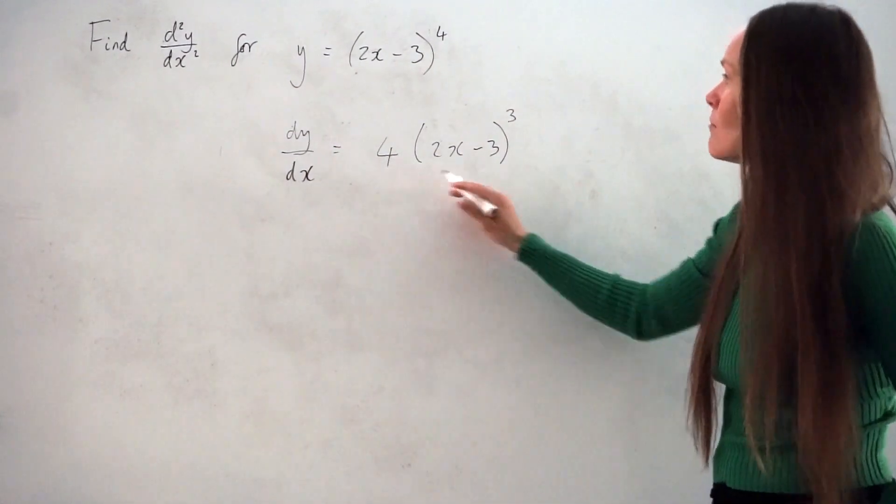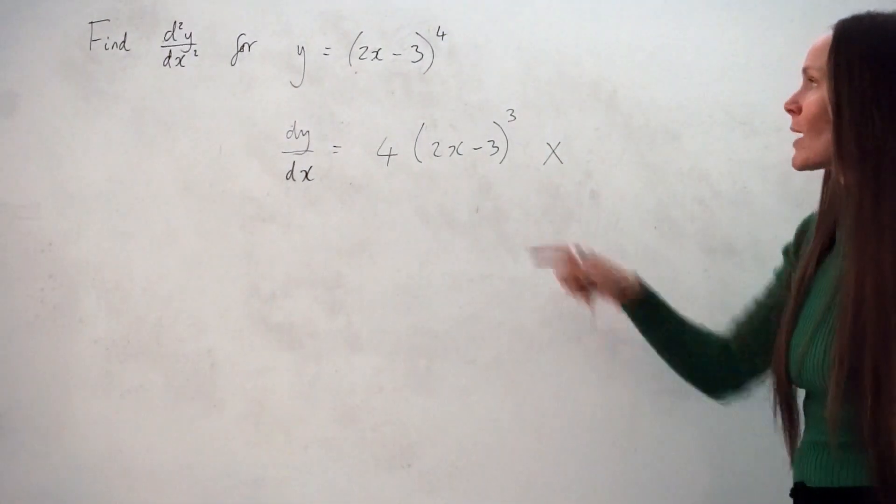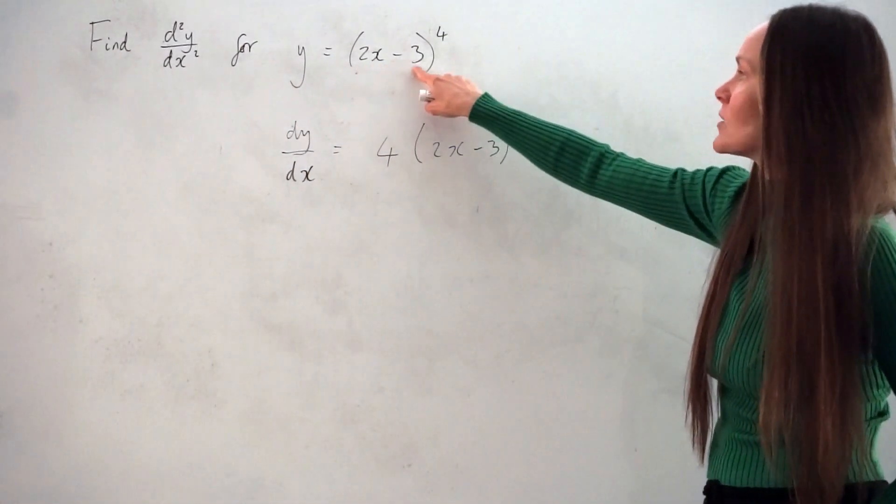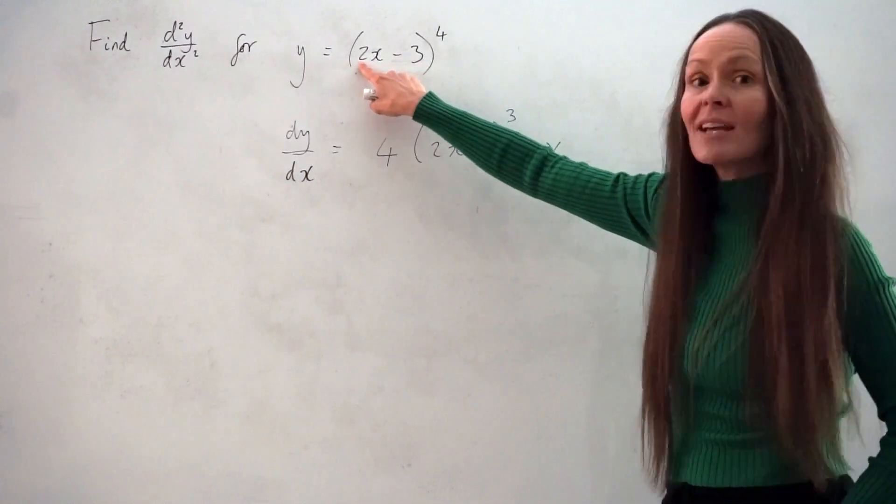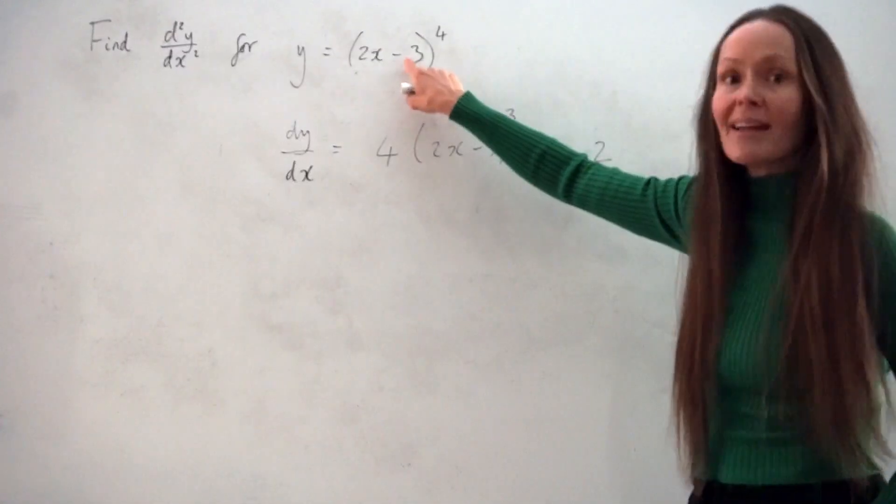Then I have to multiply this answer by the derivative of what's inside the brackets. So I have to find the derivative of 2x - 3. So if I differentiate 2x, I'm left with 2.